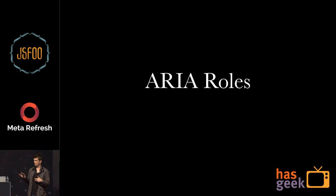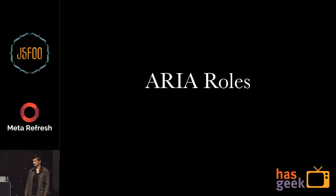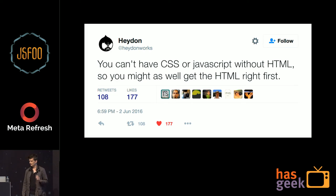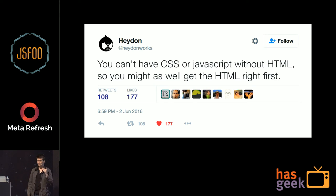ARIA roles and properties are basically an extension on top of HTML that glues everything together. Just as having smartly named classes structures your CSS, ARIA roles actually extend HTML semantics to have meaning that wouldn't otherwise be there — if you've got a tab control or an auto-select. The key reason we had the no-dependencies rule first is, as Haydon Pickering says, you can't have CSS or JavaScript without HTML. So you have to get your HTML right first.